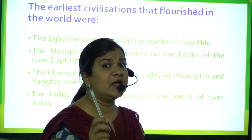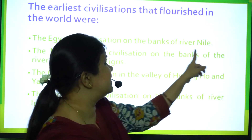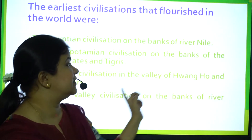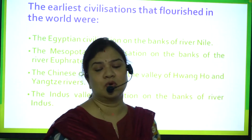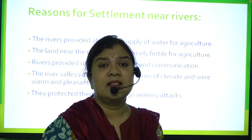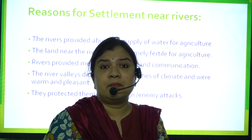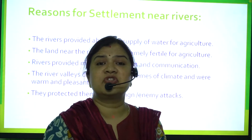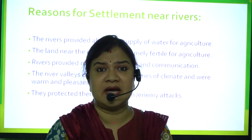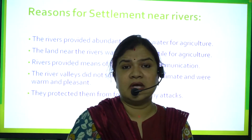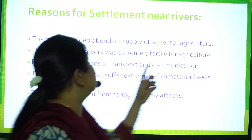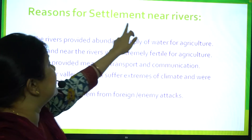Notice that each of these civilizations existed on the banks of some river — Nile, Indus, Huango, and so on. What were the reasons behind civilizations developing near rivers? The main reason was that rivers provided an abundant supply of water for agriculture.